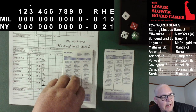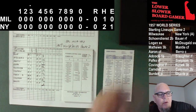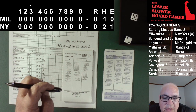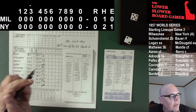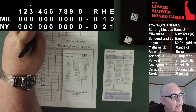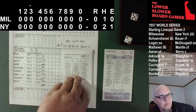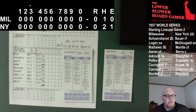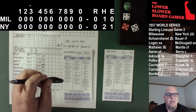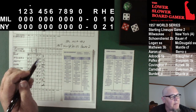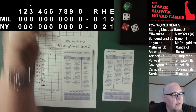Runner on first, one out. Lou Burdette lays down the bunt down the first base line — 7. Harry Simpson charging in, gets it to Jerry Coleman covering first. The sacrifice works perfectly — 3-4 — moving Crandall to second base. One out, runner in scoring position. Red Shane Dean comes to the plate. Bobby Shantz delivers — 5-9. Hard ground ball to shortstop. McDougald fields it, scoops it up, checks Crandall at second, on to Simpson for out number two — 6-3 ground ball.